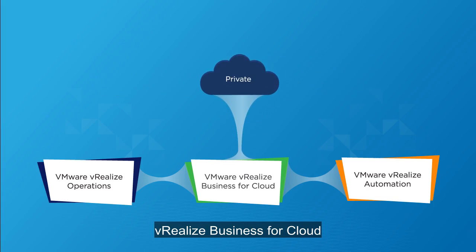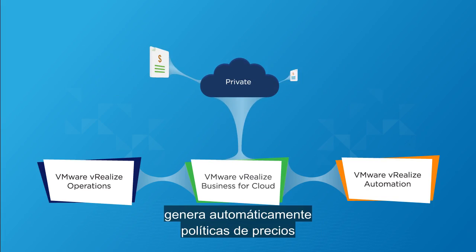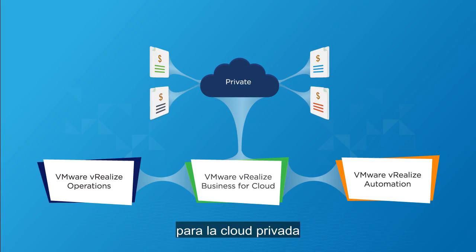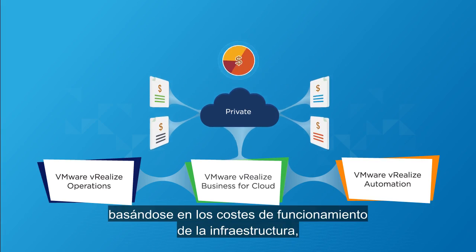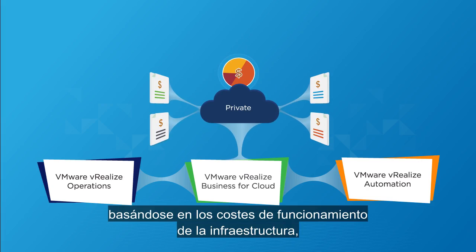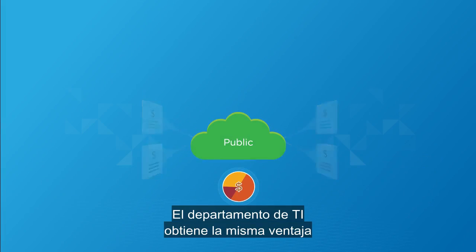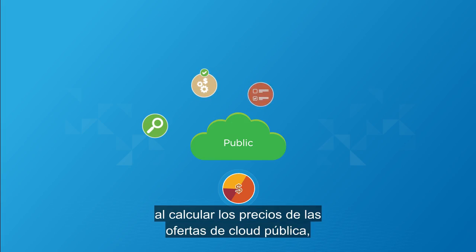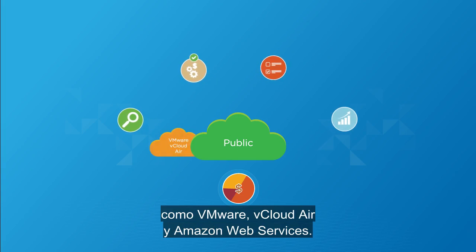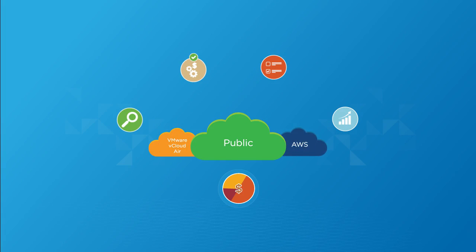vRealize Business for Cloud automatically generates pricing policies for the private cloud based on running costs of infrastructure, not speculation. IT gets the same benefit when pricing public cloud offerings like VMware vCloud Air and Amazon Web Services.